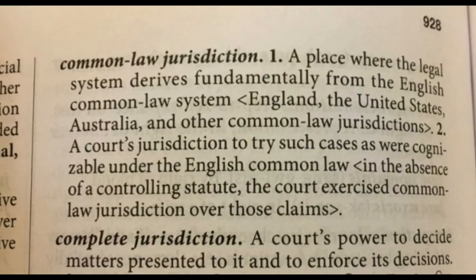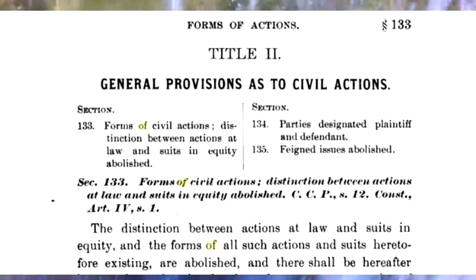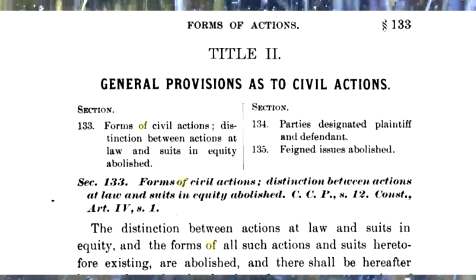So when you have a common law action, there are no statutes that control it. This is a code book published in 1900 from the library of the University of Michigan Law School. At the forms of action, it says forms of civil actions — not common law actions, civil actions.